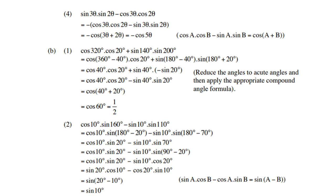B2: cos 10° times sin 160° minus sin 10° times sin 110°. Sin 160° equals sin(180° minus 20°), which is sin 20° (second quadrant, sine positive). Sin 110° equals sin(180° minus 70°), also second quadrant, sine positive, so sin 70°. Now sin 70° equals sin(90° minus 20°), which by co-function identity equals cos 20°. Reshuffling the terms gives sin 20° cos 10° minus cos 20° sin 10°, which we recognize as the sine compound rule for subtraction. Therefore sin(20° minus 10°) equals sin 10°.